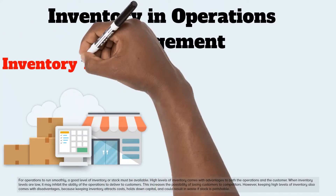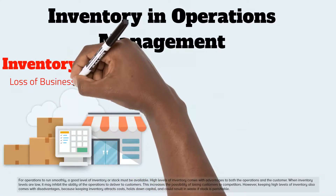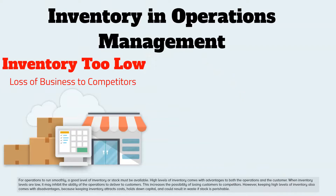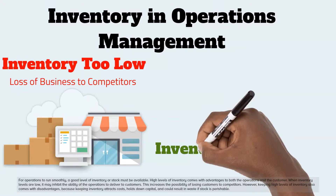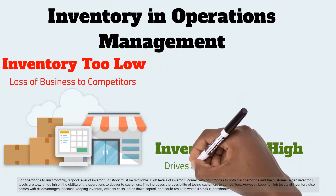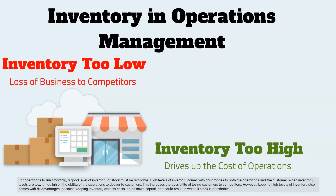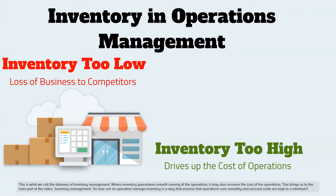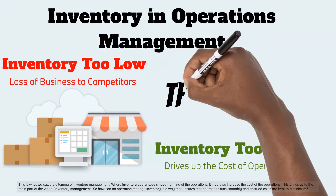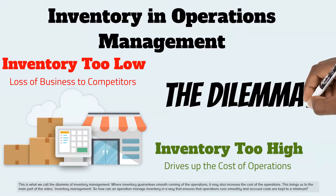For operations to run smoothly, a good level of inventory or stock must be available. High levels of inventory come with advantages to both the operations and the customer. When inventory levels are low, it may inhibit the ability of the operations to deliver to customers, increasing the possibility of losing customers to competitors. However, keeping high levels of inventory also comes with disadvantages, because keeping inventory attracts costs, holds down capital, and could result in waste if stock is perishable.